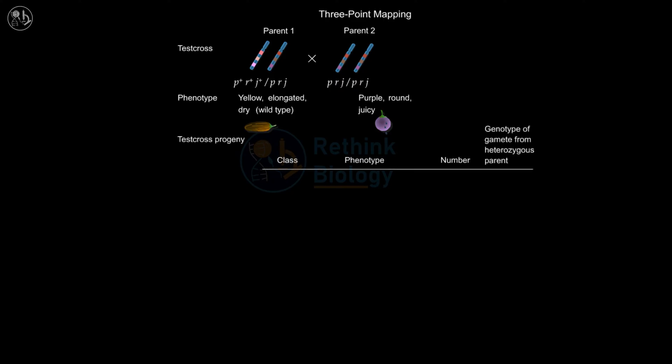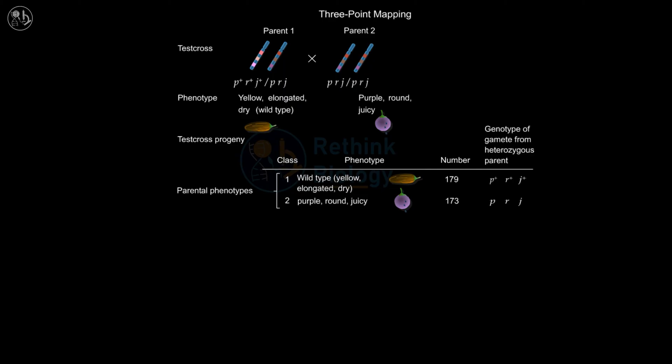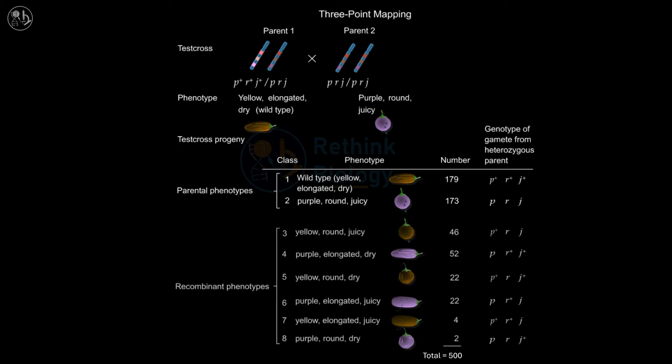Two phenotypic classes resulted from no crossing over between the parental chromosomes — these are parental phenotypes. The other six phenotypic classes resulted from one or two crossing over events between the genes on the parental chromosome — these are recombinant phenotypes.